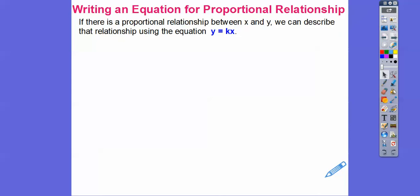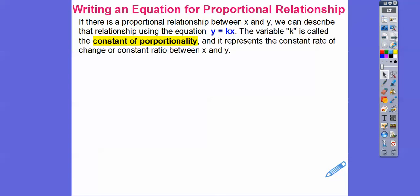If there is a proportional relationship between X and Y, we can describe it using the equation Y equals KX, where K is called the constant of proportionality. It represents the constant rate of change or the constant ratio between X and Y — typically your unit rate, the value per one unit. K equals Y over X.